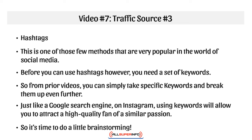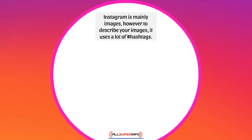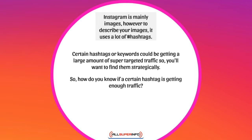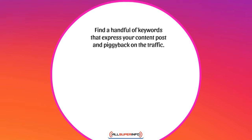It's time to do a little brainstorming. Instagram is mainly images, but it uses a lot of different hashtags to describe those images. You don't want to use random tags — you want to use hashtags that are actually getting traffic. Certain hashtags or keywords could be getting a large amount of super-targeted traffic, so you'll want to use them strategically. You can easily find this out by using BuzzSumo and other tools. You want to find a handful of keywords that express your content and piggyback on that traffic.